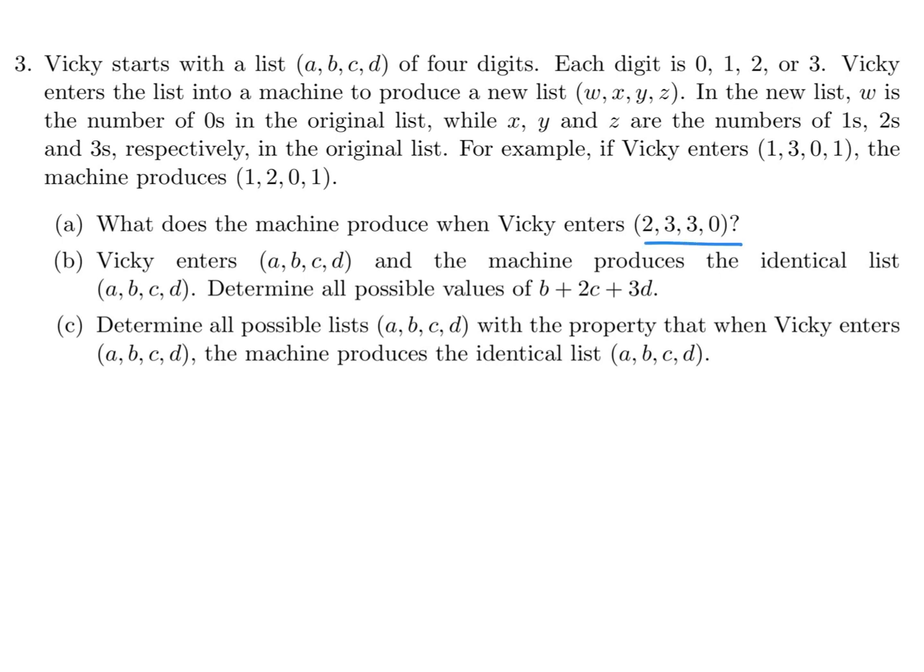What does the machine produce when Vicky enters 2, 3, 3, 0? Okay. So, the machine is going to produce a list, W, X, Y, Z. Four numbers. This first number is the number of 0s in this list. Well, how many 0s are there? There's 1 zero. The next number is the number of 1s in this list. Well, there aren't any, so there's 0 there. The next number here is the number of 2s in that list. There's only 1 two in that list. And finally, the final number is the number of 3s in this list, and there's 2 threes in that list. So, the machine will produce 1, 0, 1, 2.